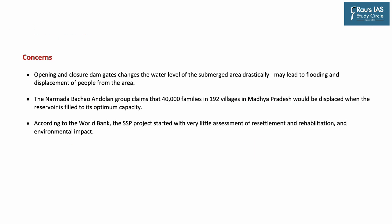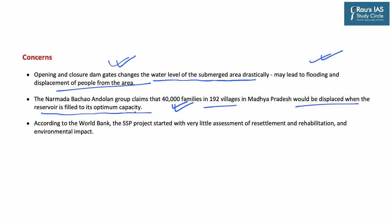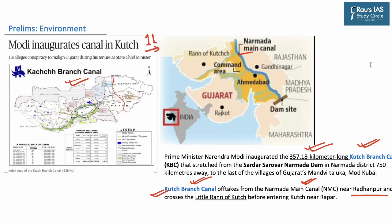However, certain concerns are also expressed. Opening and closing of dam gates often drastically changes the water level of submerged areas, potentially leading to flooding and displacement. The Narmada Bachao Andolan claims approximately 40,000 families in 192 villages in Madhya Pradesh would be displaced when the reservoir is filled to maximum capacity. According to the World Bank, the Sardar Sarovar project started with very little assessment of resettlement and rehabilitation and poor understanding of environmental impacts. This news is mainly important from the prelims perspective, though geography questions can also be asked in mains.